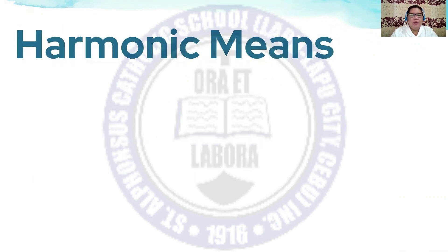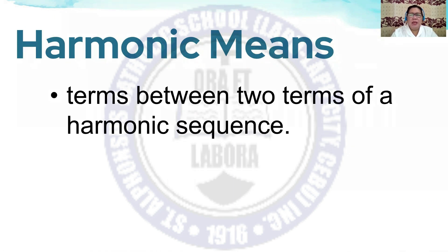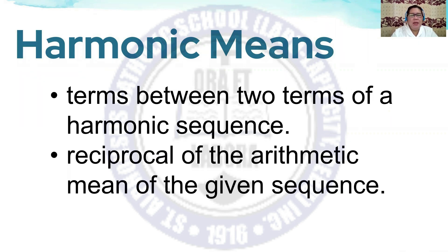What do you mean by harmonic means? There are terms in between two terms of a harmonic sequence. A harmonic mean is a reciprocal of the arithmetic mean of the given sequence.